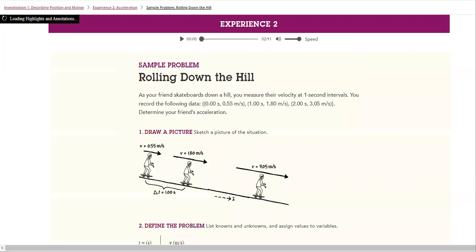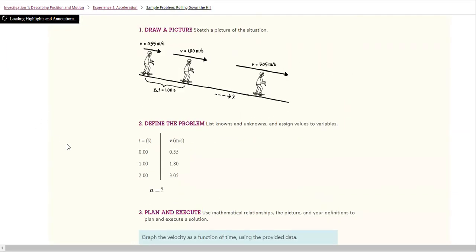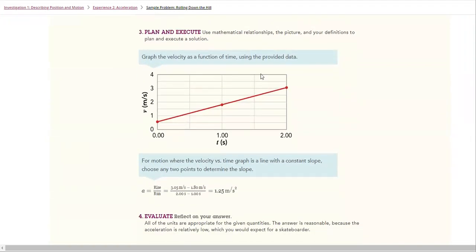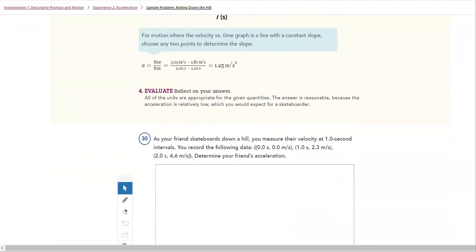Then we'll talk about rolling down the hill. This is a sample problem that we will solve together. We have here a table and we have a graph again to discuss. We have instantaneous acceleration,